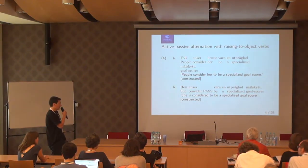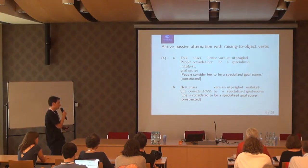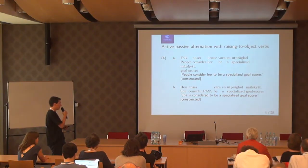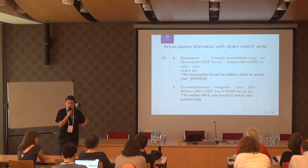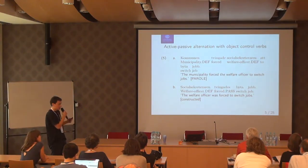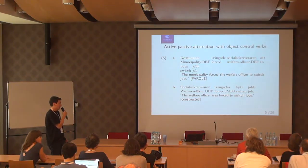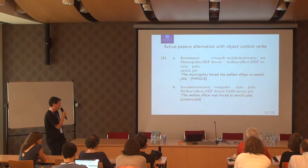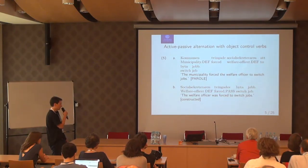You can say 'Folk anser henne vara en utpräglad målskytt' — she is considered to be a specialized goalscorer. And a closely related active-passive alternation is the alternation between active object control and passive subject control. You can have a predicate such as 'tvinga' (force): 'Kommunen tvingade socialsekreteraren att byta jobb' — the municipality forced the welfare officer to switch jobs — and the passive alternate: 'socialsekreteraren tvingades byta jobb' — the welfare officer was forced to switch jobs.